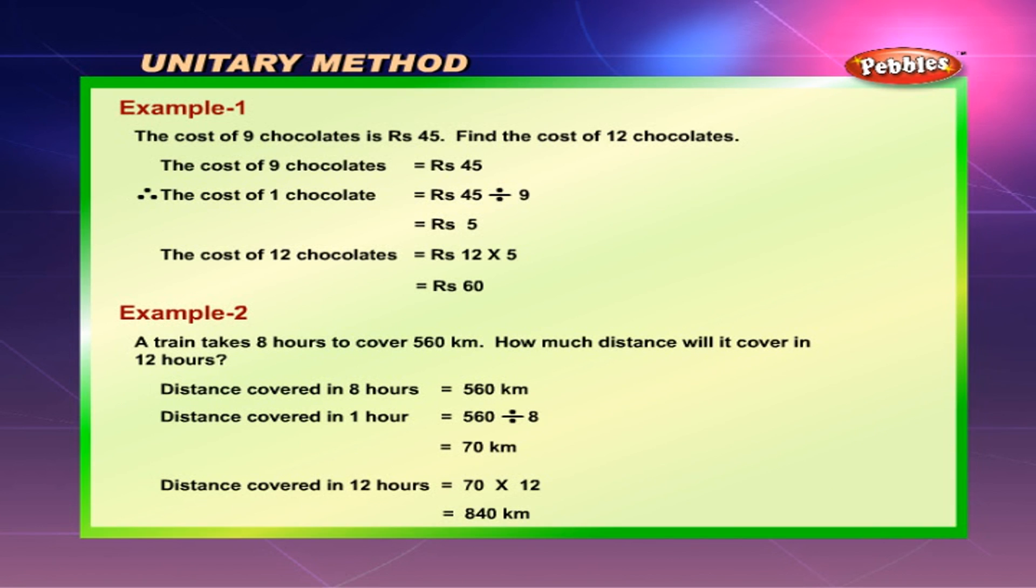Example 1: The cost of 9 chocolates is Rs 45. Find the cost of 12 chocolates. The cost of 9 chocolates is equal to Rs 45. Therefore, the cost of 1 chocolate is equal to Rs 45 divided by 9 which is equal to Rs 5. The cost of 12 chocolates is equal to Rs 12 into 5 which is equal to Rs 60.